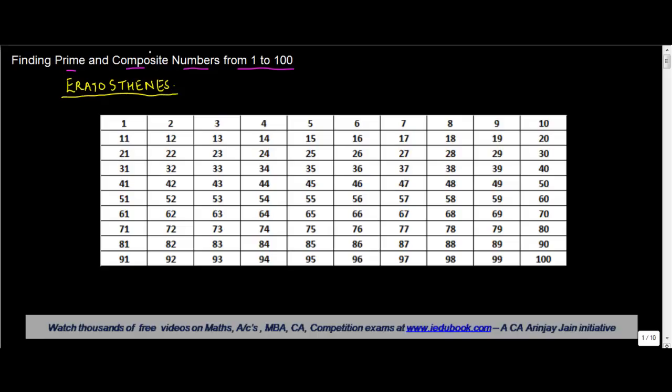In the first lecture I told you that we know that number 1 is neither a prime number nor a composite number, so we just darken it and remove it. Then we come to the second prime number which is 2. We know that 2 is a prime number because 2 is divisible or it has a factor which is only 1 and 2 itself, so it becomes a prime number.